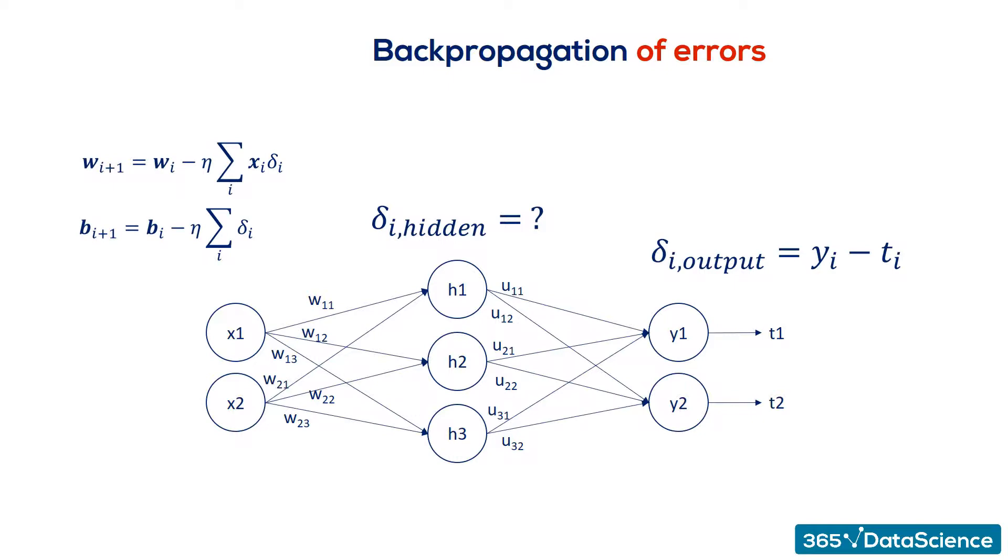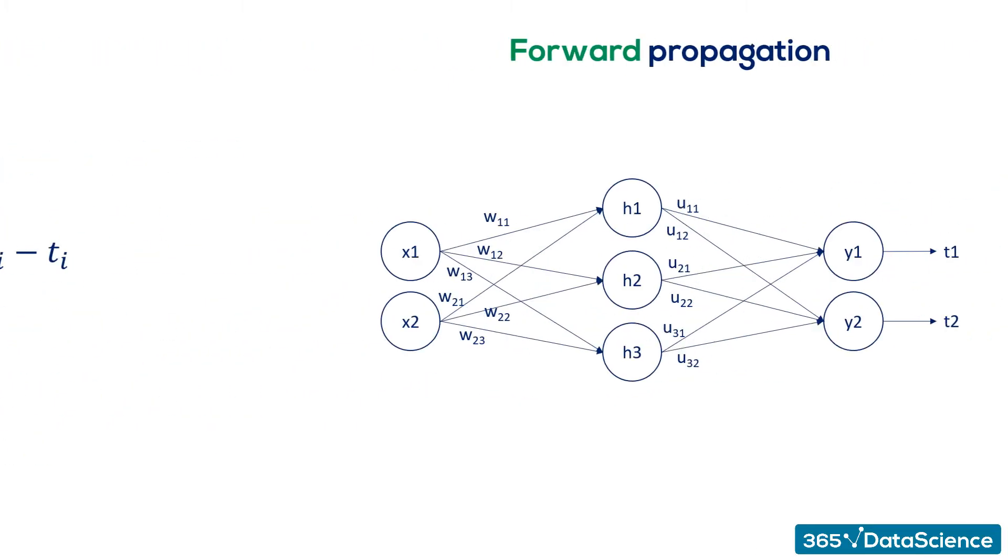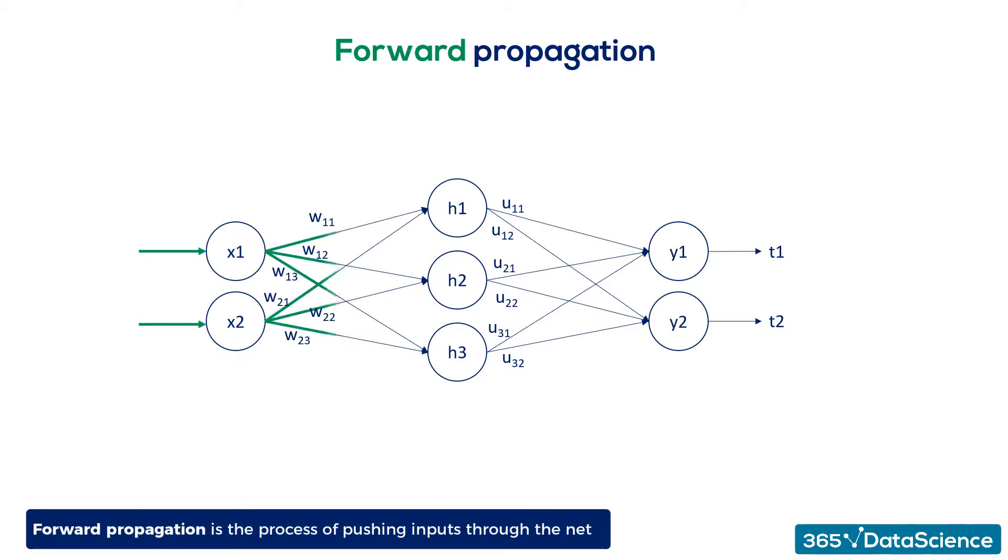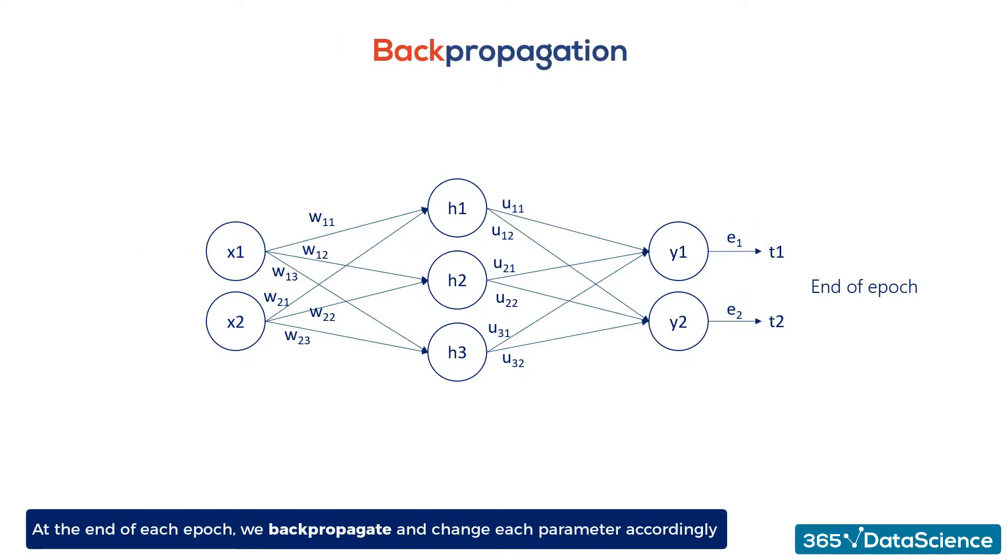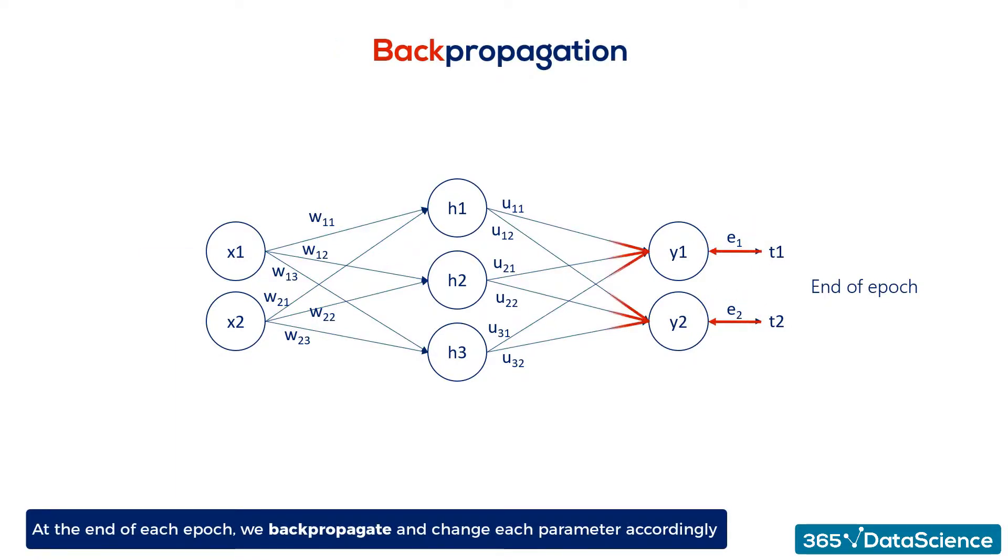Let's start from the other side of the coin, forward propagation. Forward propagation is the process of pushing inputs through the net. At the end of each epoch, the obtained outputs are compared to the targets to form the errors. Then, we backpropagate through partial derivatives and change each parameter so errors at the next epoch are minimized.